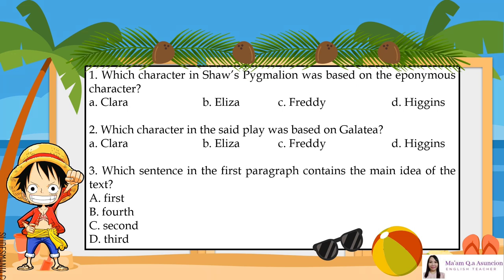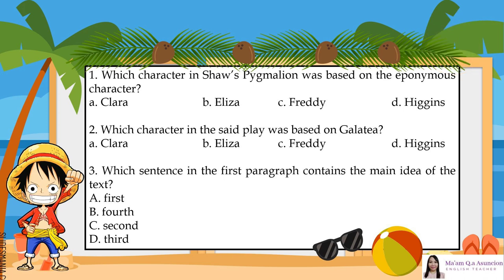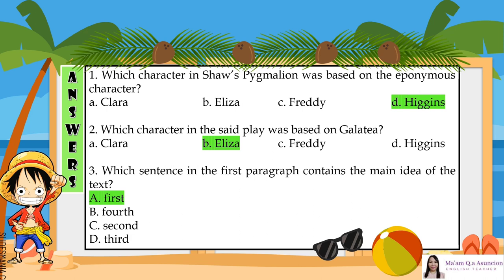Question 1: Which character in Shaw's Pygmalion was based on the eponymous character? A. Clara. B. Eliza. C. Freddy. D. Higgins. Question 2: Which character in the said play was based on Galatea? A. Clara. B. Eliza. C. Freddy. D. Higgins. Question 3: Which sentence in the first paragraph contains the main idea of the text? A. First. B. Fourth. C. Second. D. Third. The answers are: 1. D — Higgins. 2. B — Eliza. 3. A — First.